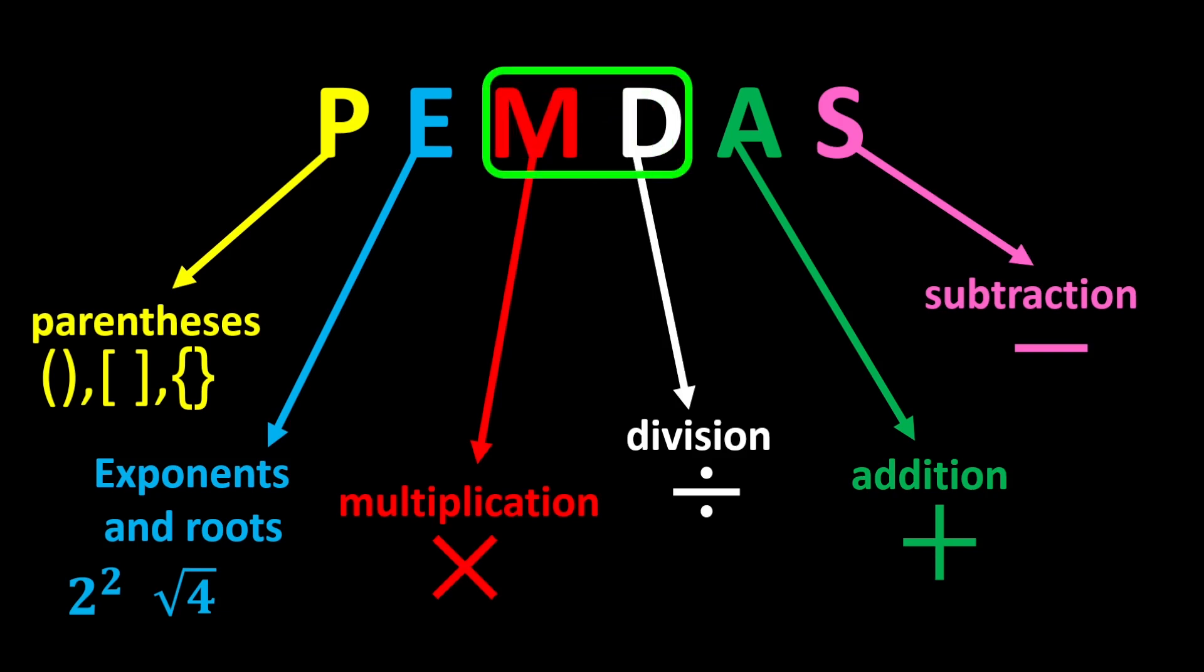Remember that multiplication and division have equal priority. In any expression that has both multiplication and division, we move from left to right and perform whichever we reach first. This rule also applies to addition and subtraction.